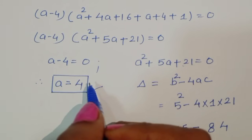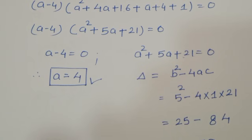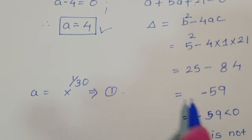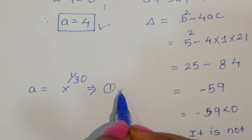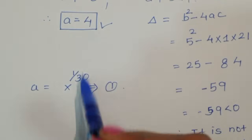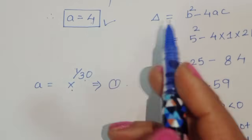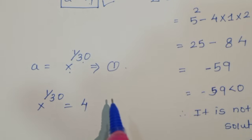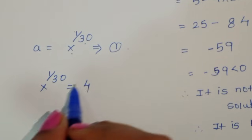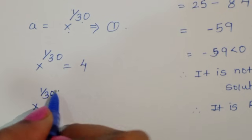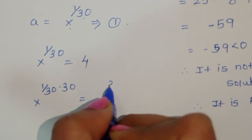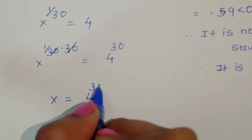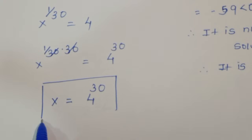We already defined a = x^(1/30). Since a equals 4, we have x to the power 1/30 equals 4. Raising both sides to the power of 30, we get x to the power (1/30 times 30) equals 4^30, so x equals 4^30. This is the solution for x.